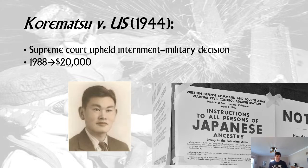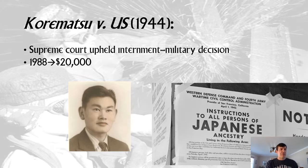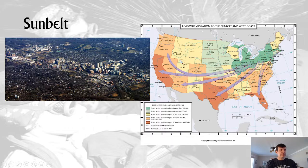The United States would eventually accept blame — but you'll notice it was in 1988 that Congress passed a law signed by President Reagan. Eventually every living Japanese American who was interned would get $20,000. It seems like a slap in the face.